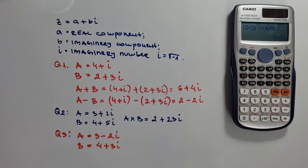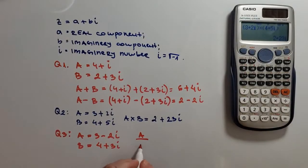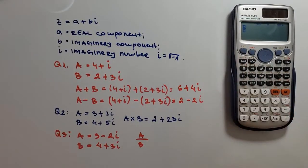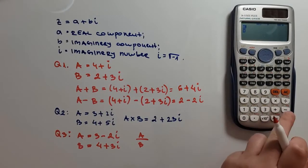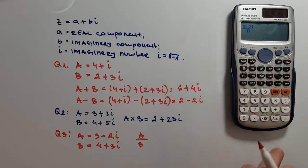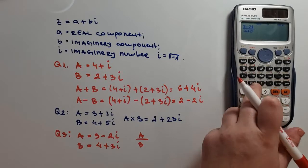When dividing complex numbers, the best way is to write the division as a fraction, or a over b. So let's do this on our calculator. And we have 3 minus 2i divided by 4 plus 3i.